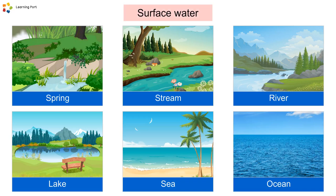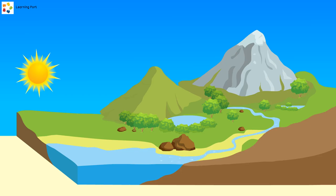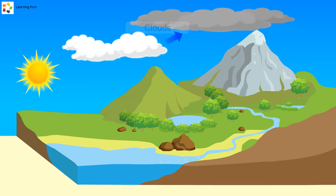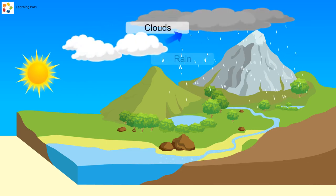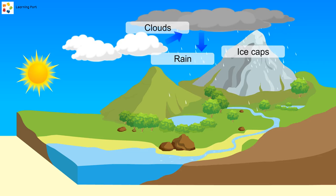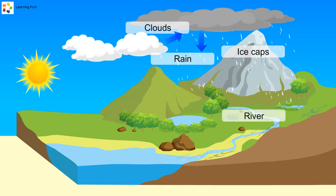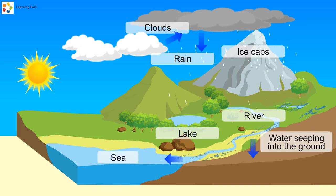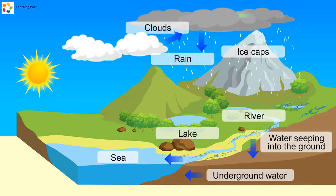"However, the source of this spring water is from under the ground. When rain falls onto the ground, some of it will flow on the surface into streams and rivers and form surface water. Some will seep into the ground and fill up the spaces in between the soil particles."